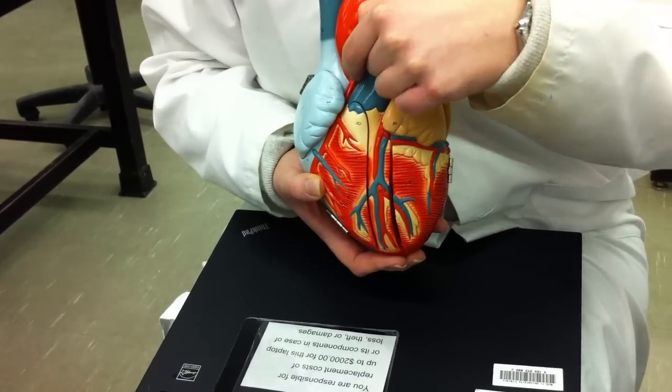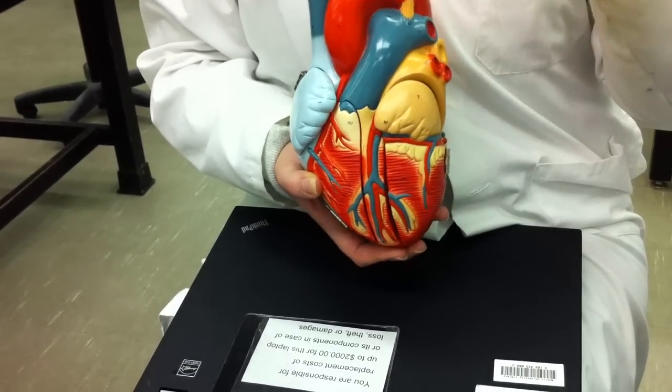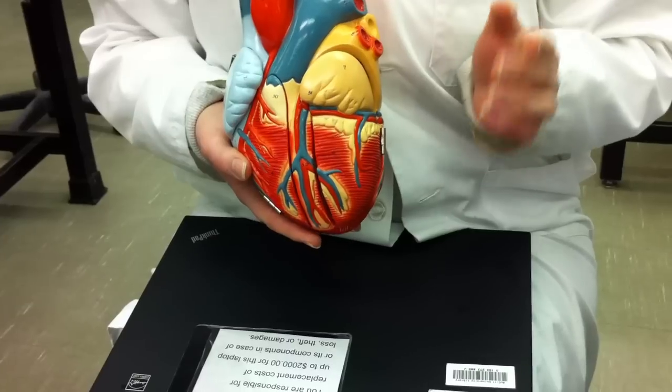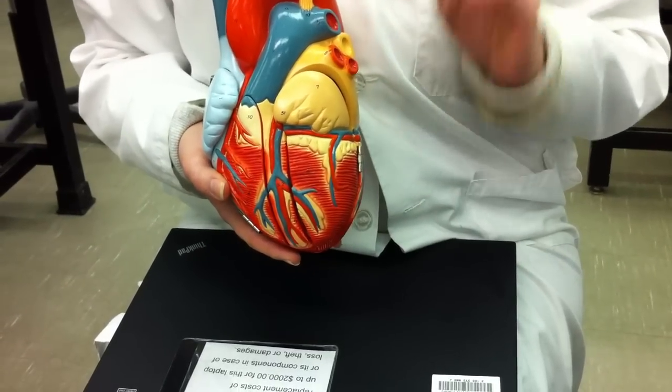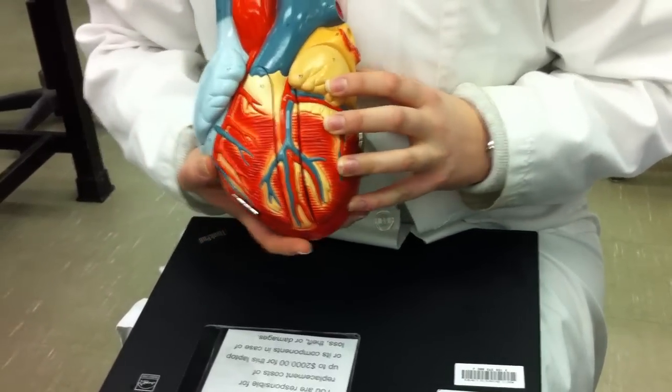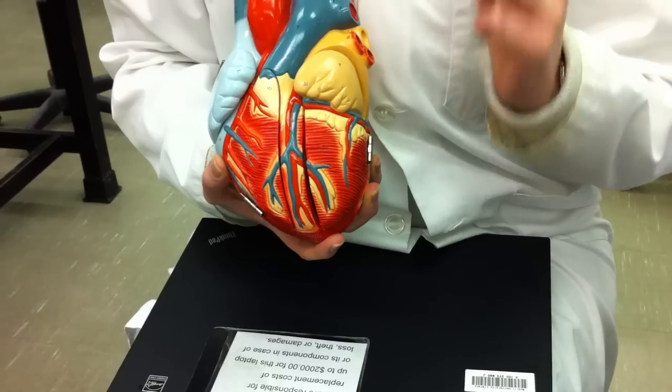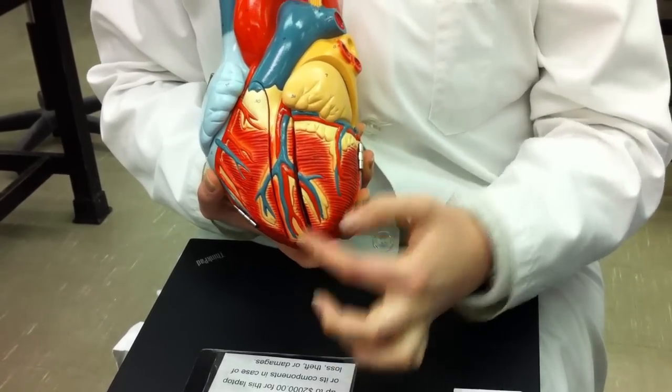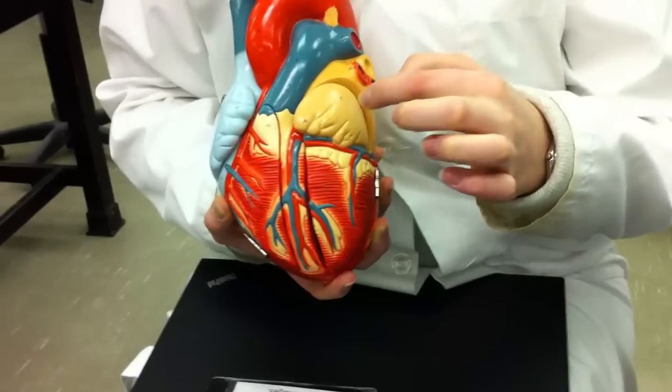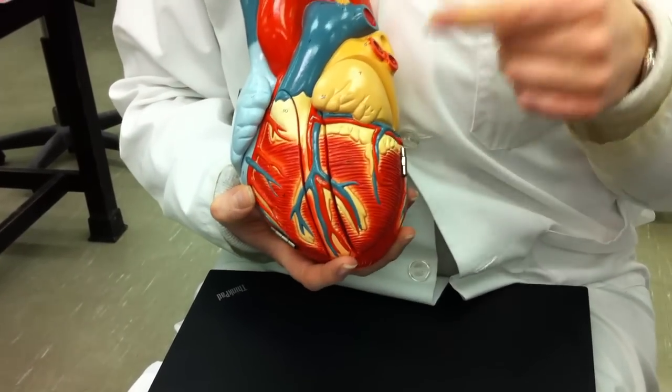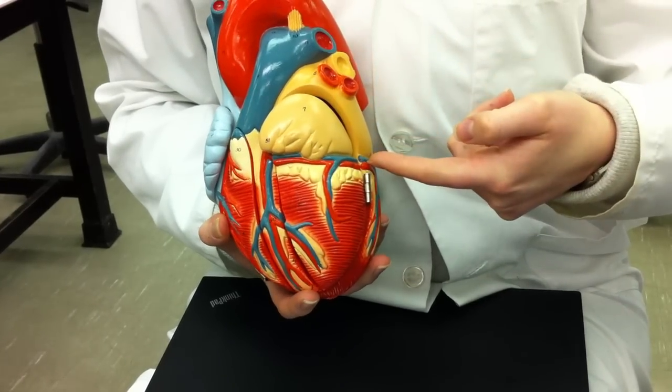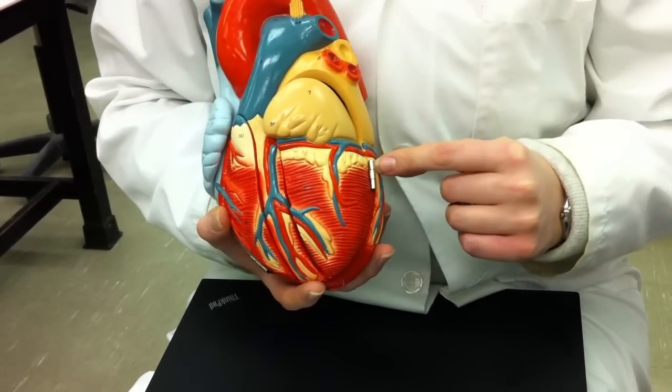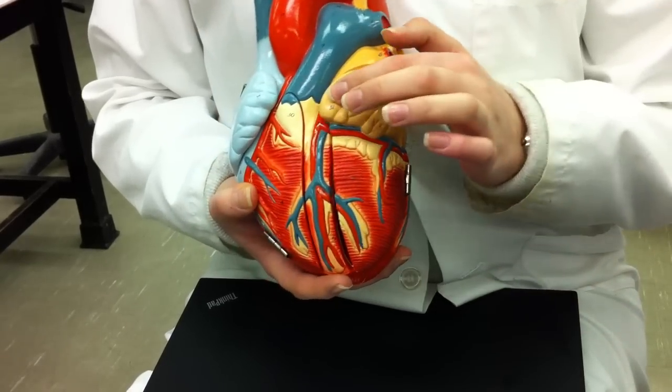Right beneath the aortic arch is the aortic sinus. The left coronary artery is divided into two sections: the paraconal interventricular branch, which goes between the two ventricles, and the circumflex branch, which is the top one here. These feed the left side of the heart.